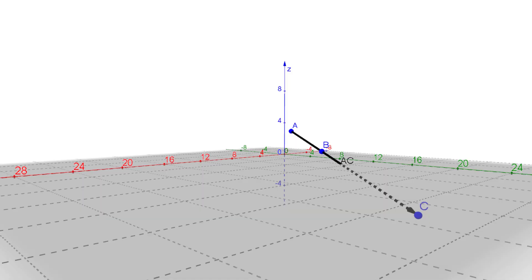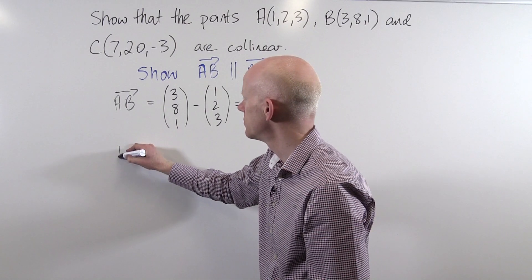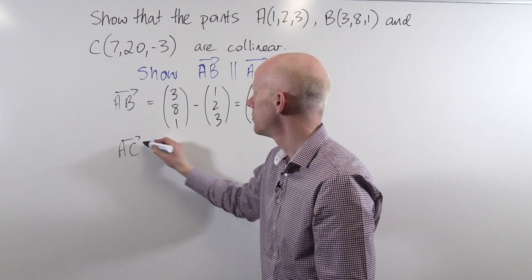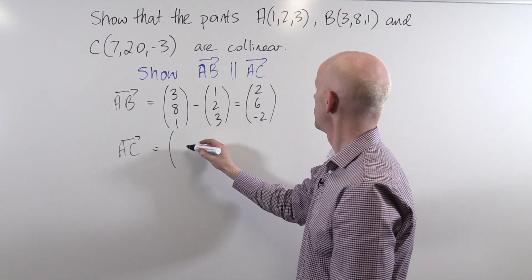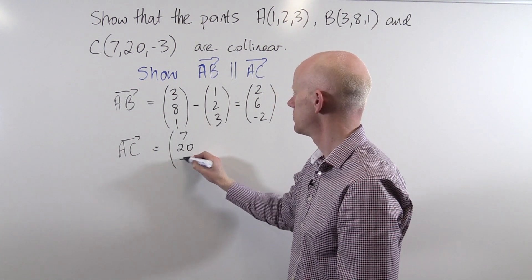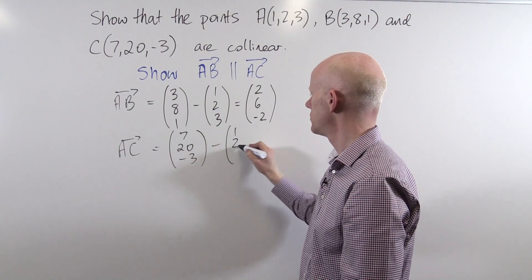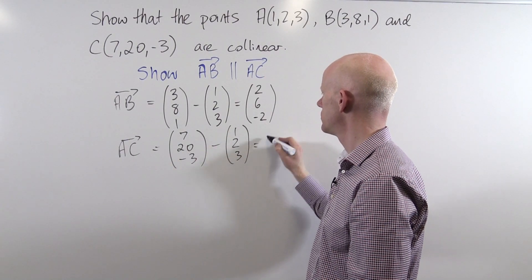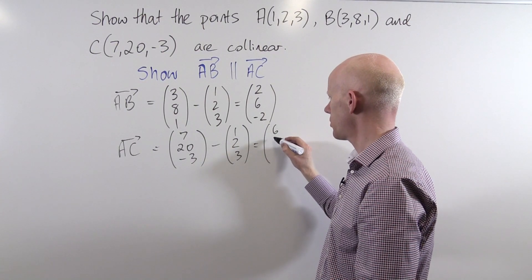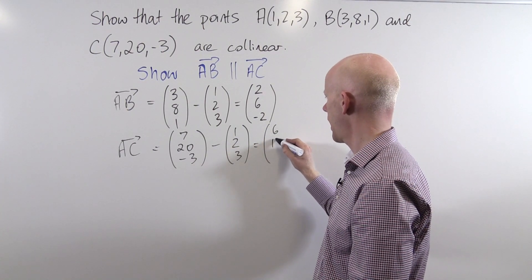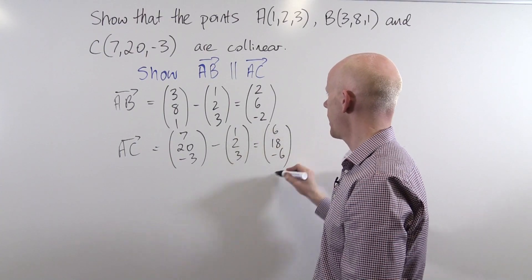Similarly, the vector AC is the difference between C and A. Subtracting the components gives me 6, 18 and negative 6.